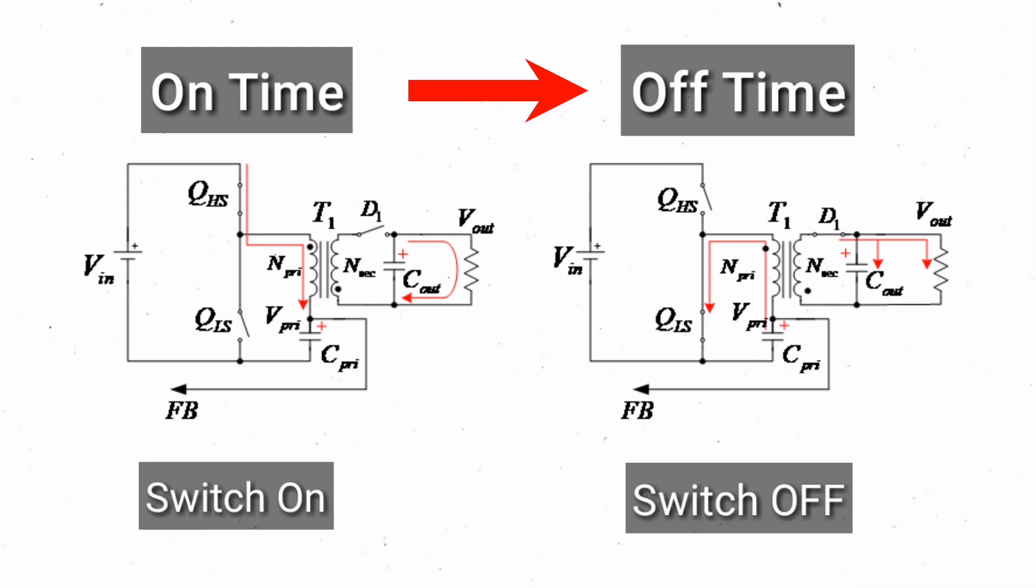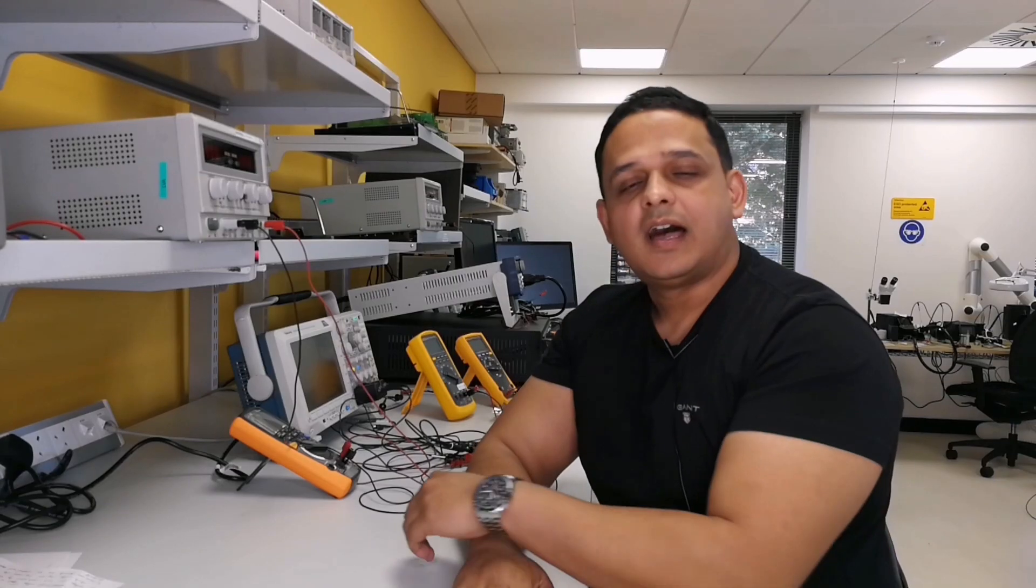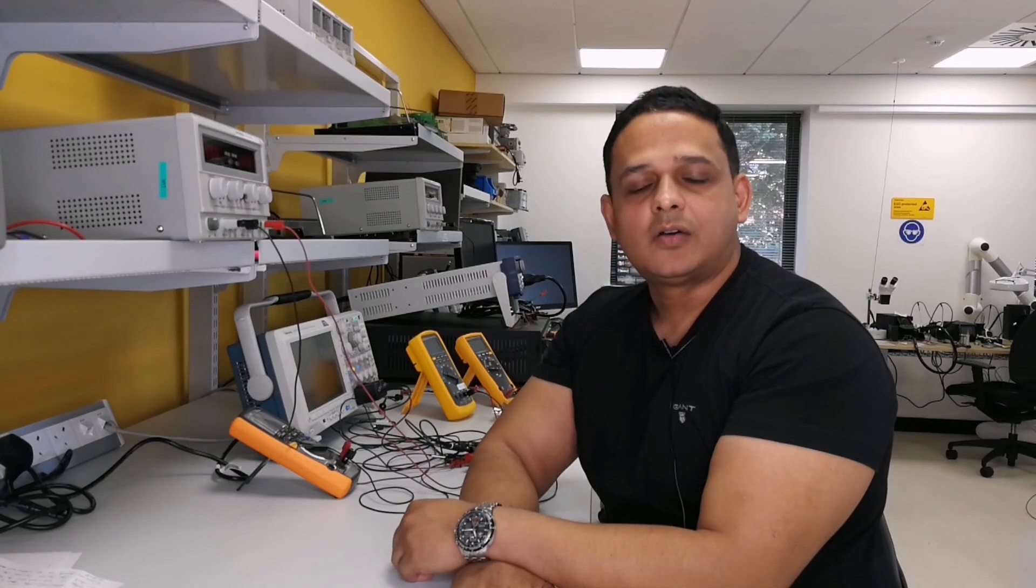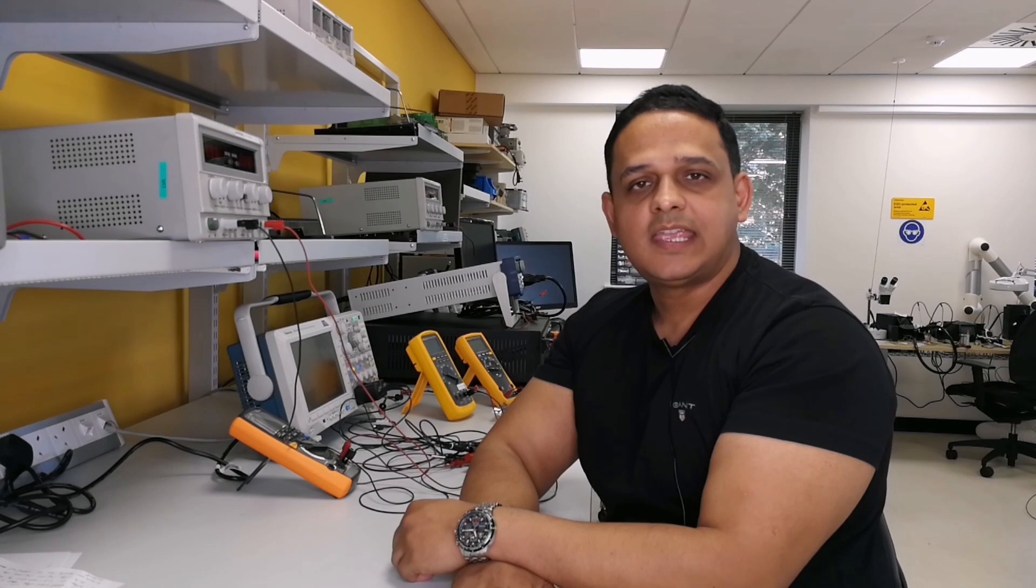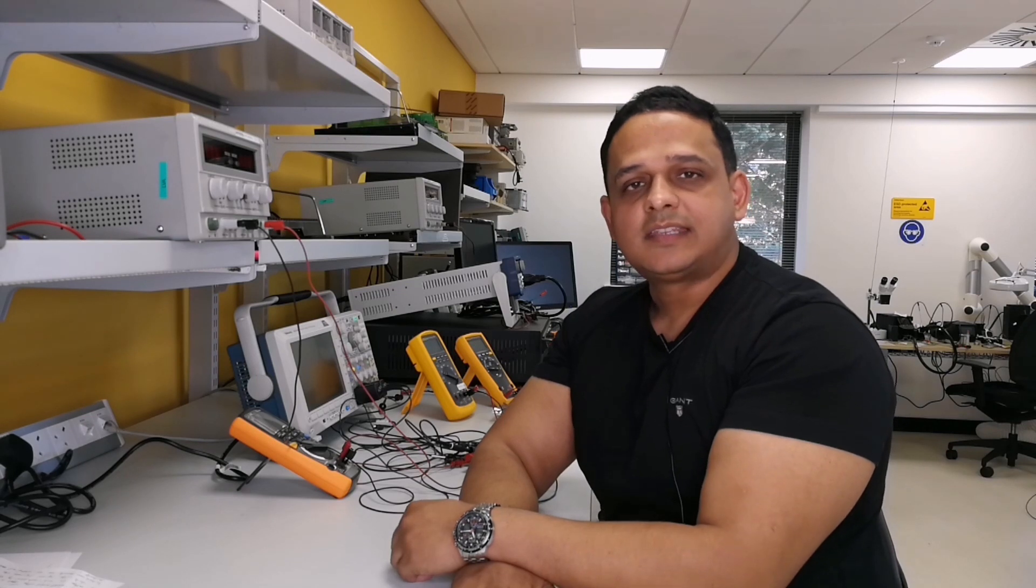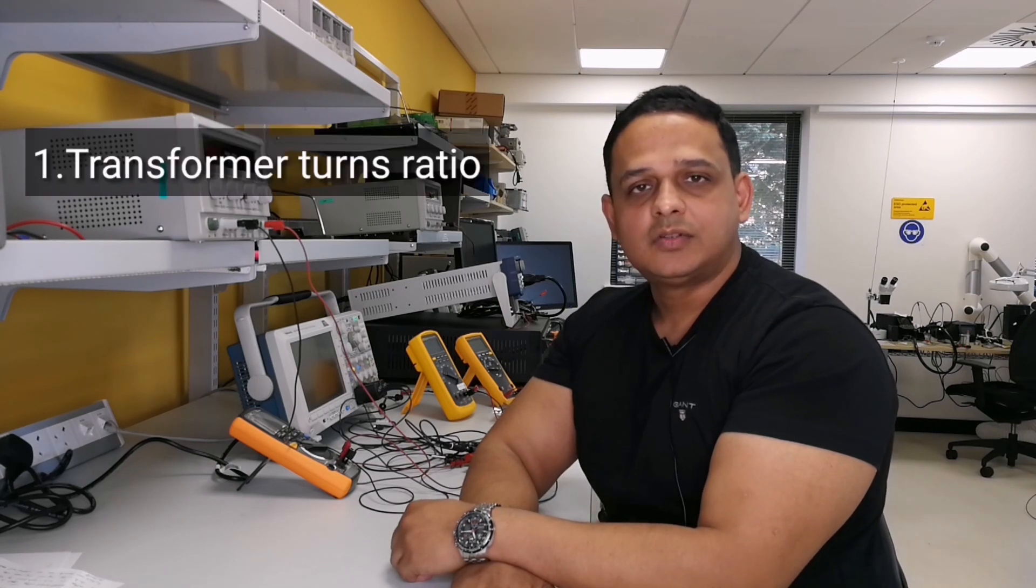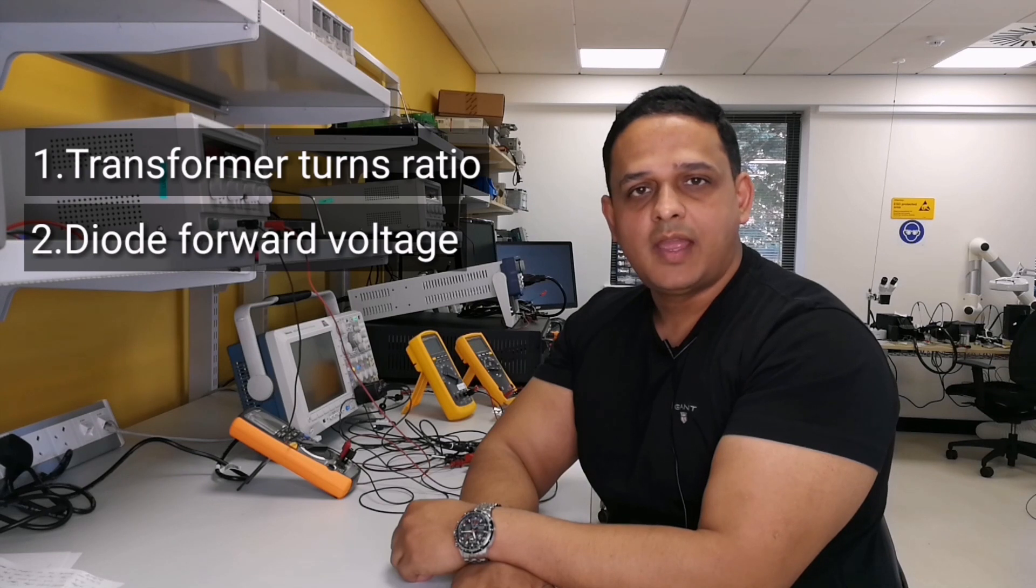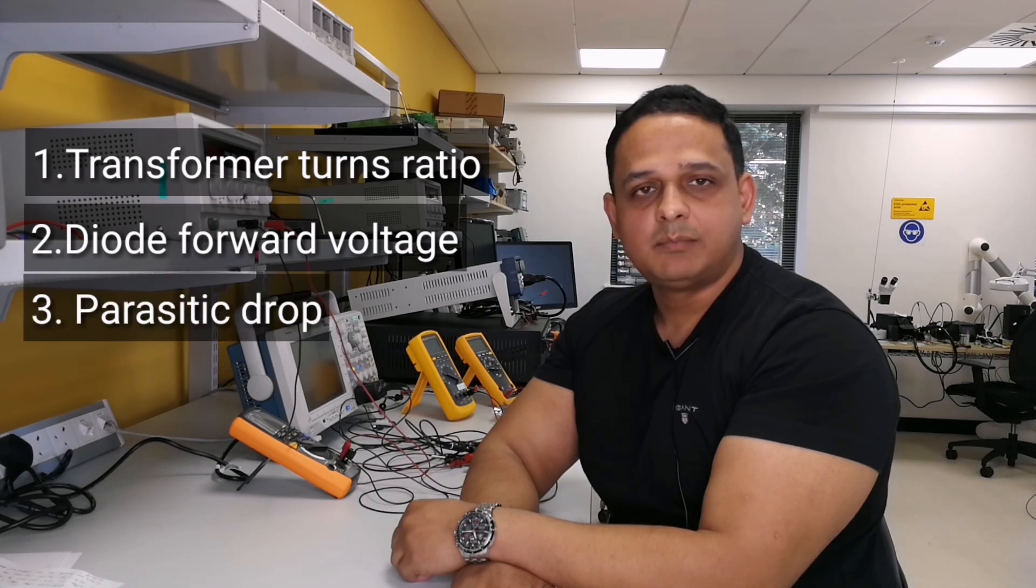The voltage at the primary capacitor C-PRI is well regulated by a primary side feedback loop. The isolated output voltage across the capacitor C-OUT is the scaled version of the well-regulated primary side voltage across the capacitor C-PRI. The scaling is contributed by the transformer turns ratio, the diode forward voltage drop, and drop across the associated parasitics.